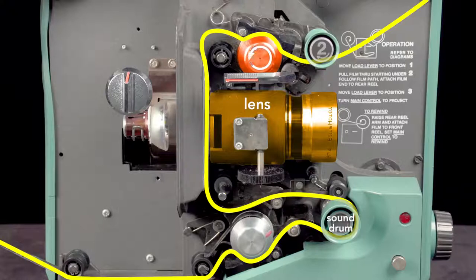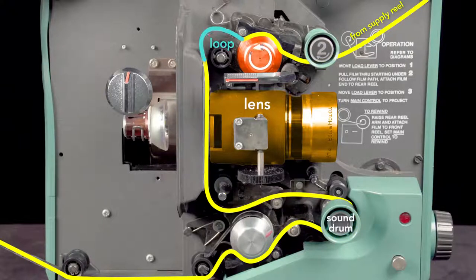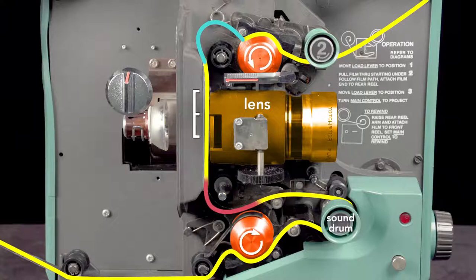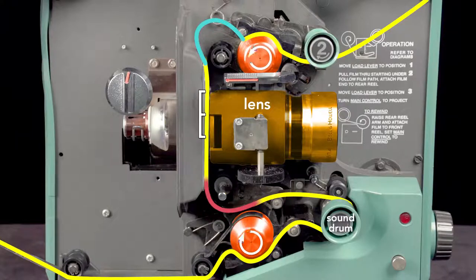The top sprocket pulls the film from the supply reel continuously. A loop of slack film starts to form. This slack allows the shuttle to quickly advance to the next frame without tearing the film. A second loop of slack film at the bottom also forms. The bottom sprocket pulls the film continuously. This is important because it allows the sound to be read correctly.